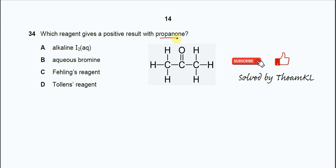First, you need to know the structure of propanol. The carbonyl group is bonded to two methyl groups. For option A, alkaline iodine solution is used to test the presence of methyl ketone.